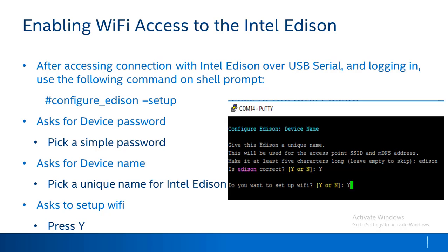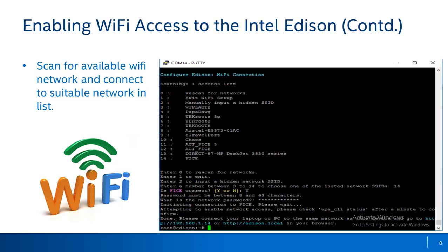To enable Wi-Fi on the Intel Edison, after connecting to the board and getting access to the command line, we need to type the command: configure_edison --setup. This command will ask to set up a device password and device name. Give suitable inputs as needed. Then it asks to set up Wi-Fi as shown in the image. Press Y. The board's Wi-Fi will scan all available Wi-Fi networks and you can select the suitable network to connect your board. Once the connection is established, the board says 'done' and you return to your shell prompt.